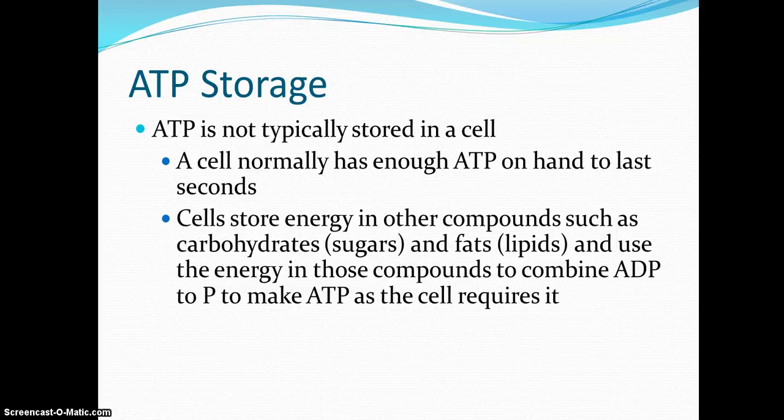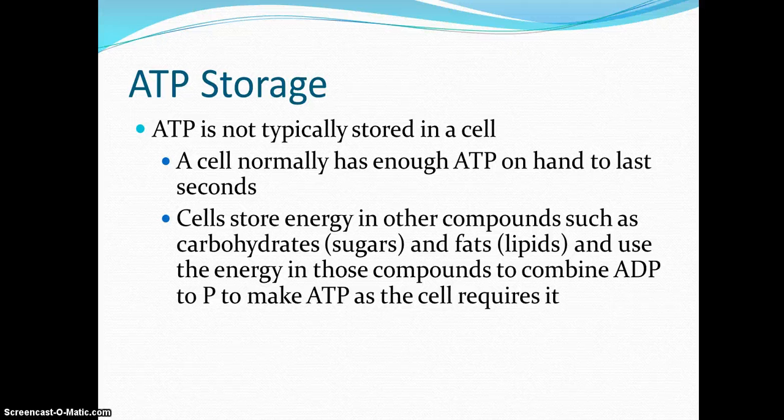So we don't store ATP, but what we do is we store the raw materials to make the ATP. And you guys know this. We store carbs. We store it as glycogen. Plants store carbs as starch. We also store lipids. We store body fat. Plants can store different oils and things like that. And then when we need extra ATP, we'll break down those carbs in our bodies. We'll break down those fats in our bodies, and we'll use that energy to combine the ADP with the phosphate to make the ATP as we need it.